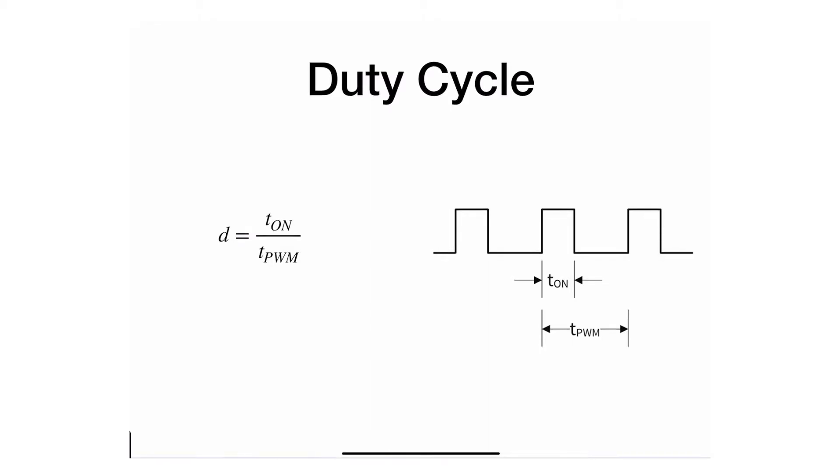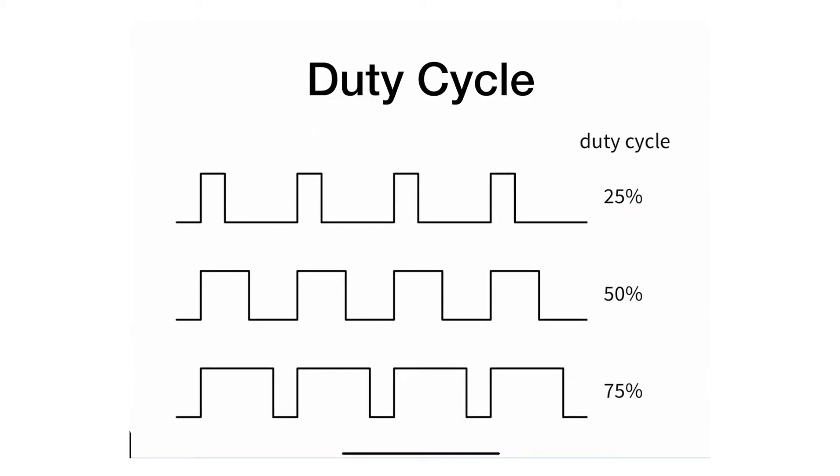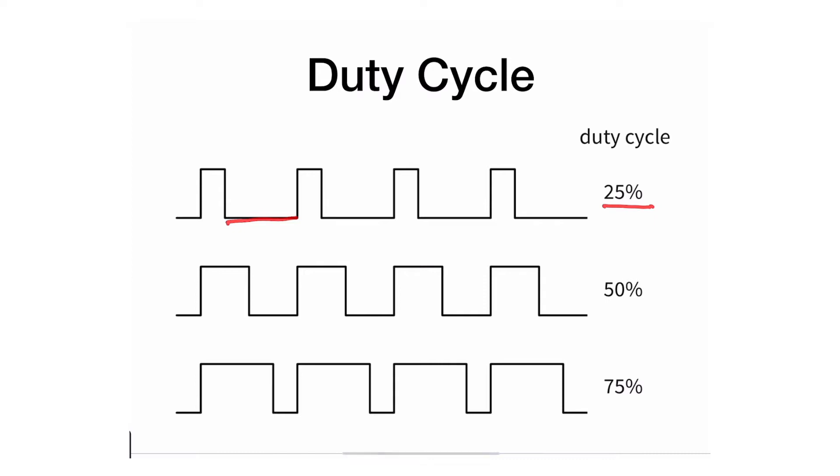Okay, so let's look at a few examples with different duty cycles. In the first one, it tells me that 25 percent of the time the signal is in the on position, and of course it's going to be 75 percent of the time in the off position or zero position.